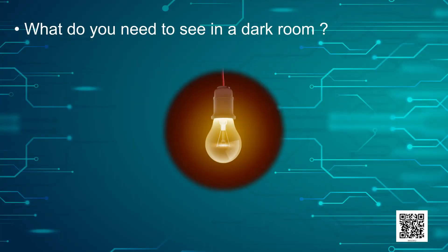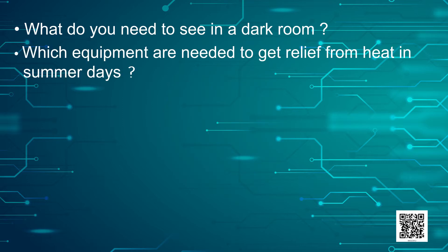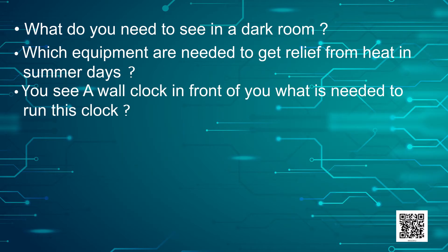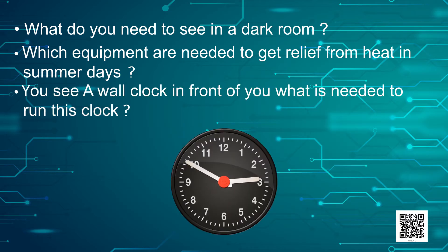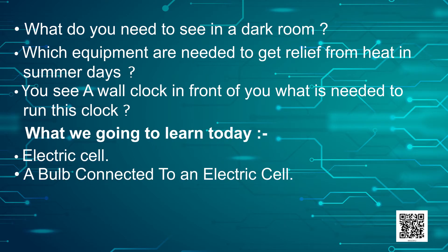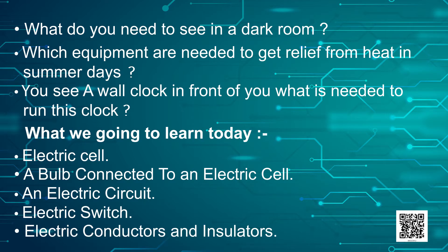What do you need to see in a dark room? Which equipments are needed to get relief from heat in summer days? You see a wall clock in front of you — what is needed to run this clock? Now we will see what we are going to learn today: electric cell, a bulb connected to an electric cell, electric circuit, electric switch, electric conductors and insulators.